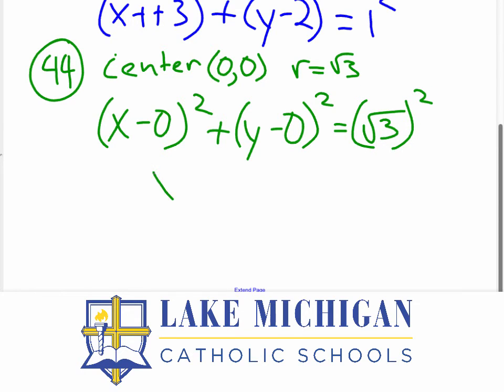Well, this just simplifies to x squared. This just simplifies to y squared. Now when you square a square root, you're left with the base. So this is equal to 3. Any questions?